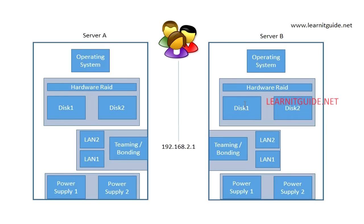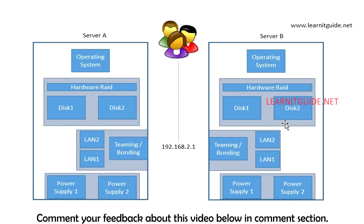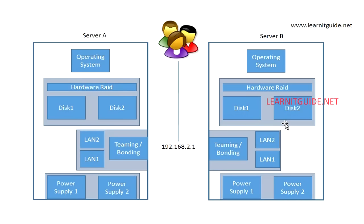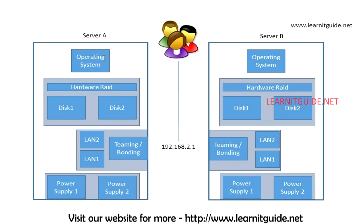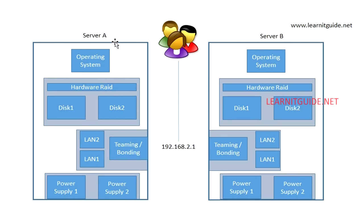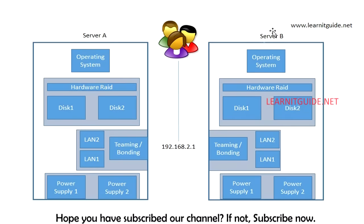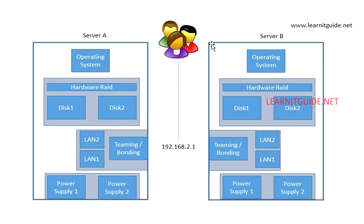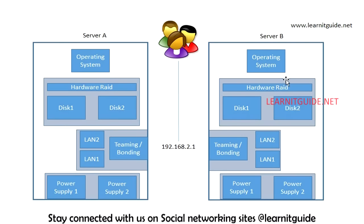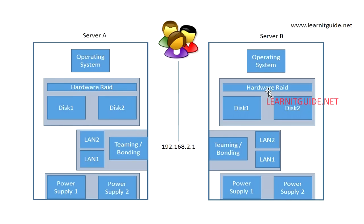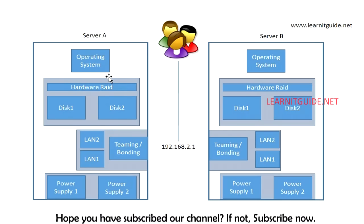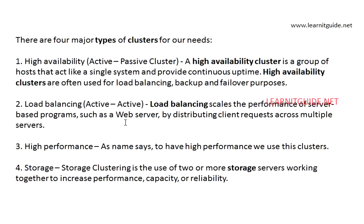When Server A is recovered, we can bring the configured IP back to it — Server A becomes active again and Server B returns to passive. The advantage is high availability at all times. The disadvantage is that you pay for two servers but only use one; the second node's resources — memory, CPU — are not utilized and just sit idle until the active node goes down.